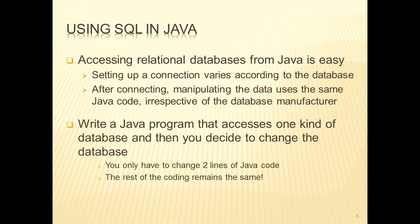When you write a Java program that accesses one kind of database — for example, you might write it using Oracle — then if you decide to change your database to a different one, such as MySQL, you've only got to change two lines of code: basically that little bit of code that connects to the database. All the rest of the coding remains the same, and that's one of the great things about using databases within Java.